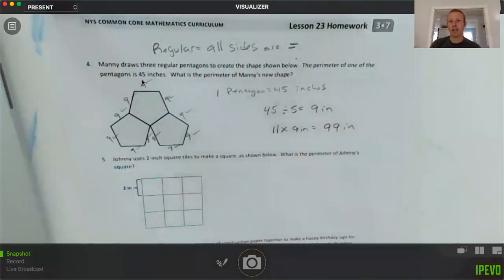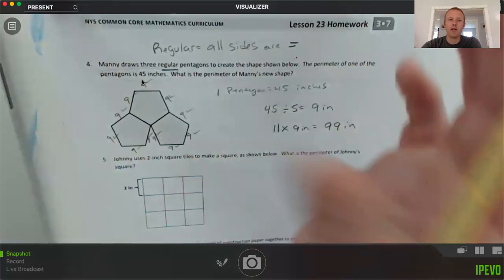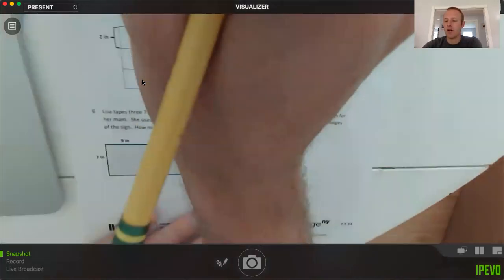So again, the multiplication—11 times nine—is quite simple. The multiplication wasn't difficult here. It was understanding why they gave us this information in the problem and what to do with it once we had it, and understanding what a regular polygon is, a regular pentagon, meaning that all of the sides are the same length.